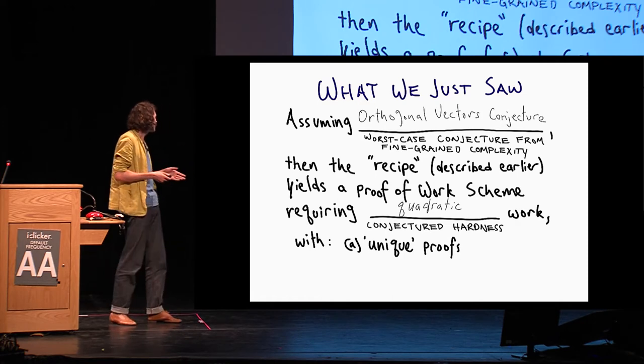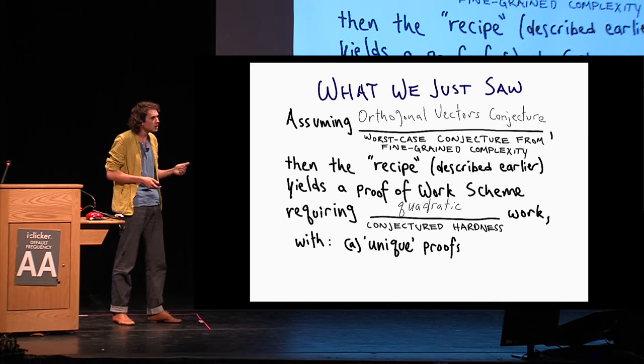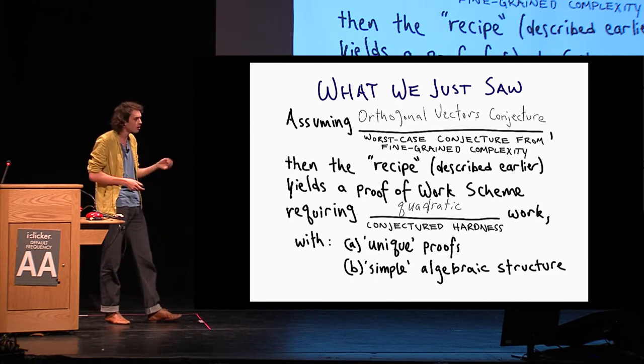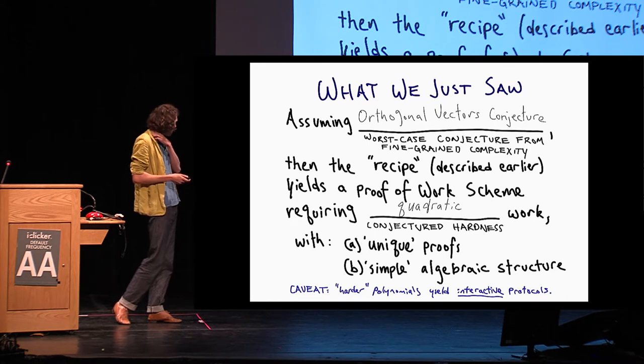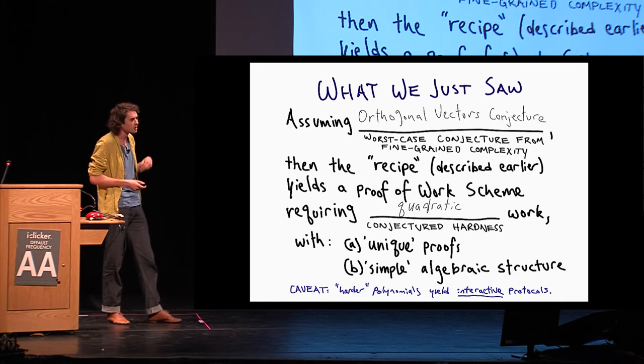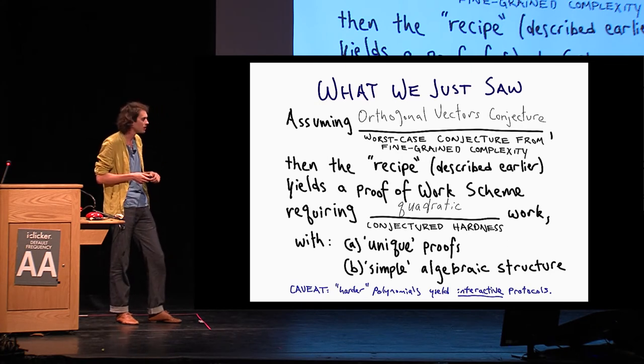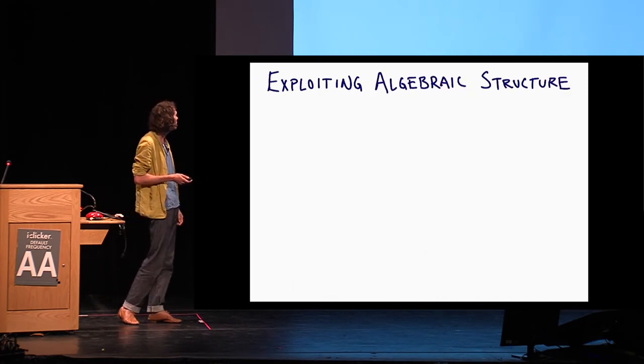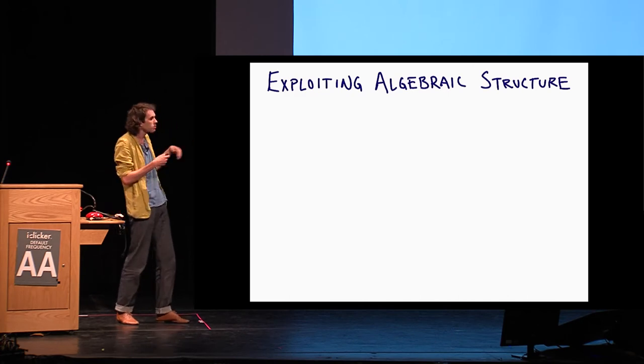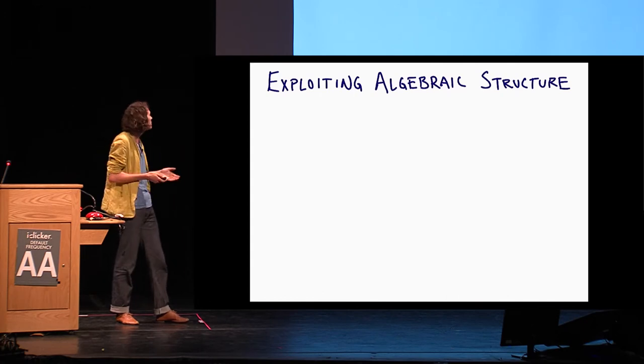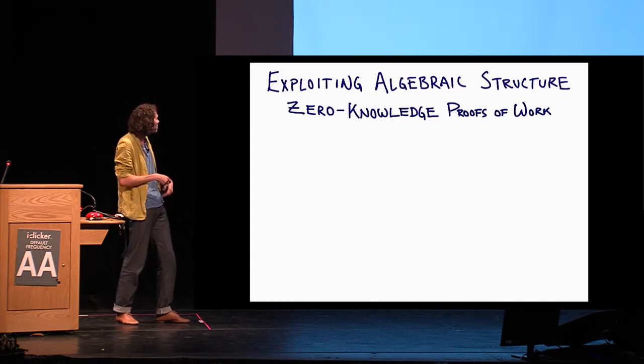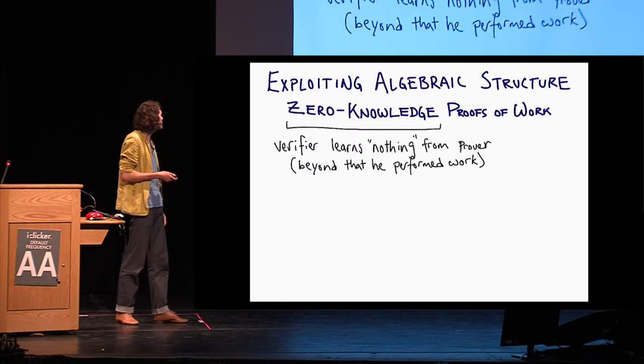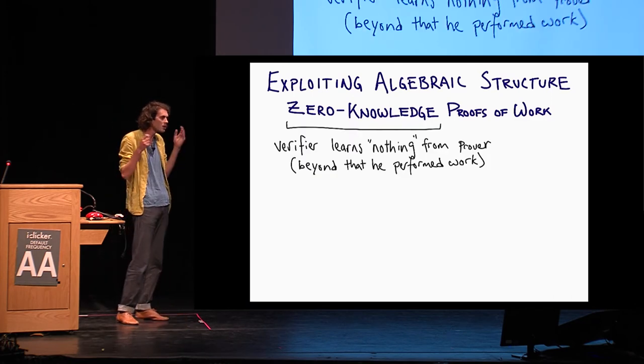Also, if you're paying attention, note that this proof-of-work scheme has unique proofs, and these proofs have a very simple algebraic structure, just involve evaluating polynomials. And I should, as I mentioned before, for the harder polynomial problems, we need interactive protocols. We're not sure how to do it non-interactively without additional assumptions. So how can we exploit this algebraic structure I was just talking about? Everything is just evaluating polynomials, essentially. So one instantiation of this idea that we have in the paper is what we call zero-knowledge proofs of work.